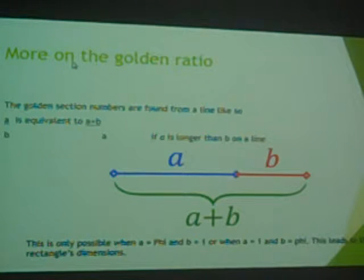So, the golden section numbers are found from a line, like this, where you have a line segment, and a is longer than b. And a over b is equivalent to a plus b over a, which is only possible when a equals phi and b equals 1, or a equals 1 and b equals phi.